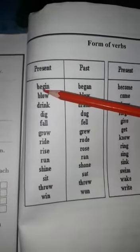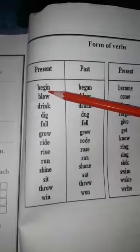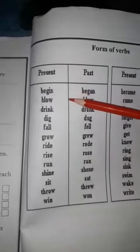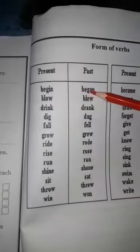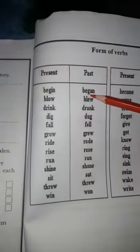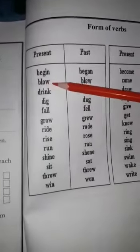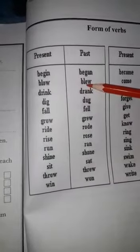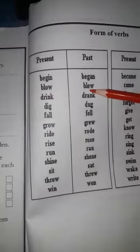First see what the word is: B-E-G-I-N, begin. Begin hai present mein, first form. Its past or second form kya hai: B-E-G-A-N, began. Next is B-L-O-W, blow. Blow hai present mein first form, and its second form kya hai: B-L-E-W, blew.